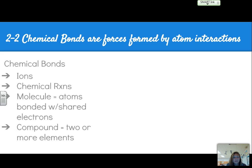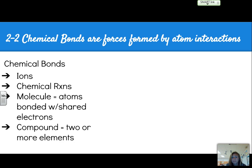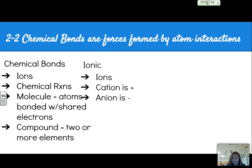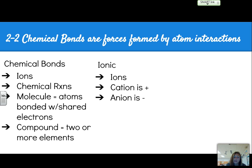Section 2.2 talks about chemical bonds. These can form between ions or also create ions. Chemical reactions occur when you break a bond or a bond actually attaches. A molecule is atoms bonded with shared electrons, and a compound is two or more elements bonded together. There are two types of bonds: ionic bonds are between ions — the cation is the positive ion, and the anion is the negative ion — and through those charges, the bonds are created through attraction.